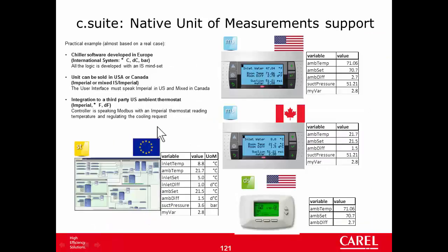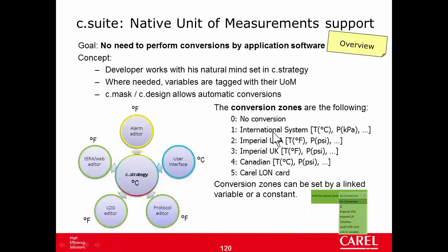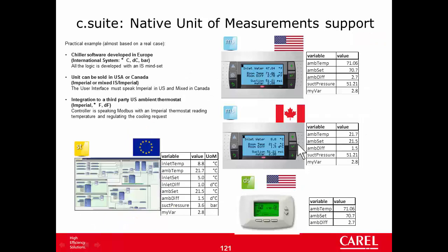In another example: software developed in Europe with temperatures in Celsius, and the unit sold in the States. The final user sets Imperial USA conversion zone, where temperature is in Fahrenheit. So Fahrenheit is expected in the display and Celsius is in C-Strategy, so a conversion is required. For example, the ambient temperature is 21.7 Celsius, but in the mask we see 71.06 Fahrenheit — the conversion is implemented automatically.